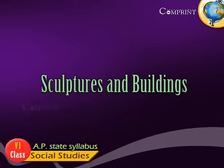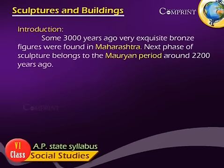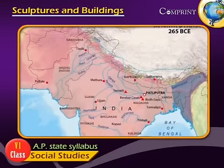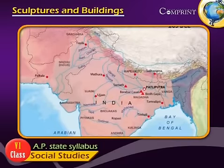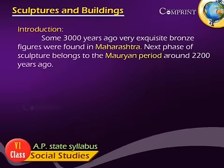Sculptures and Buildings. Some 3000 years ago, very exquisite bronze figures were found in Maharashtra. The next phase of sculptures belonged to the Mauryan period, around 2200 years ago.